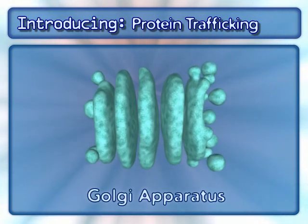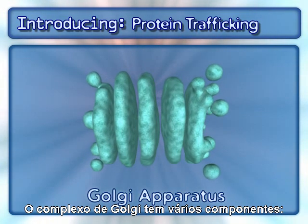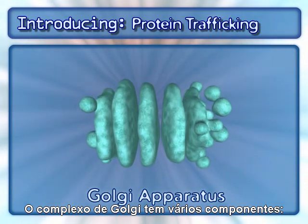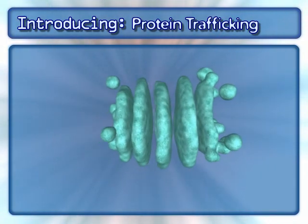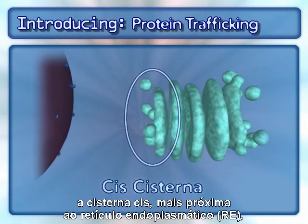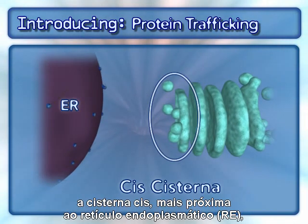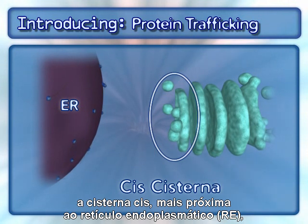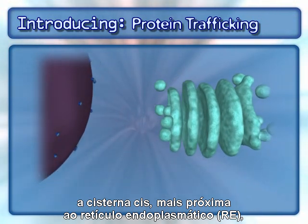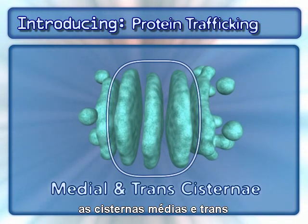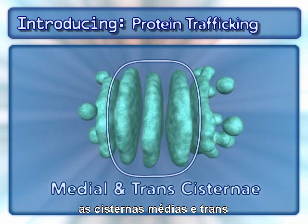The Golgi apparatus consists of general components: the cis-cisterna nearest to the endoplasmic reticulum, or ER, the medial and trans-cisternae,